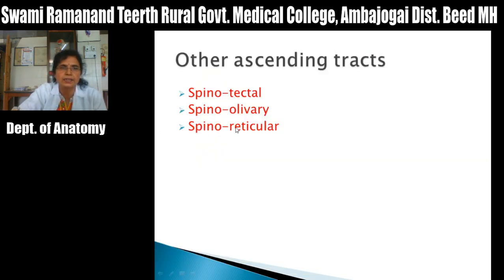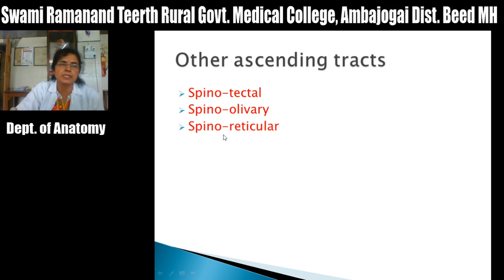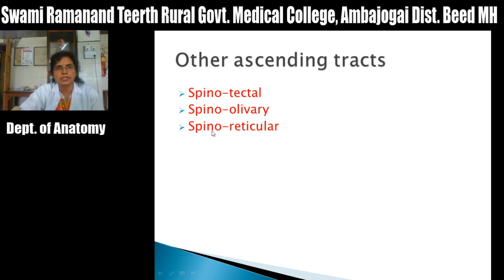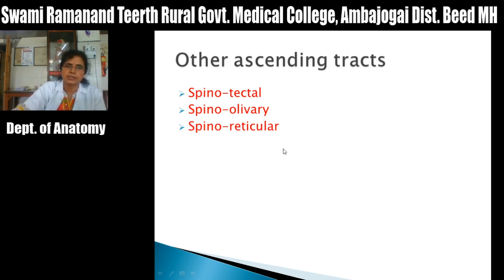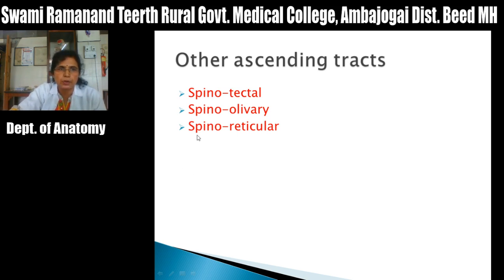The spinoreticular tract connects neurons of the dorsal horn of the spinal cord with the reticular formation present in the brainstem — medulla, pons, and midbrain. The main function of this tract is to carry sensation of deep pain, which is important for emotional awareness, arousal response, and autonomic functions. Deep slow pain fibers are carried through this tract to the thalamus and then to various areas of the cortex responsible for arousal response.